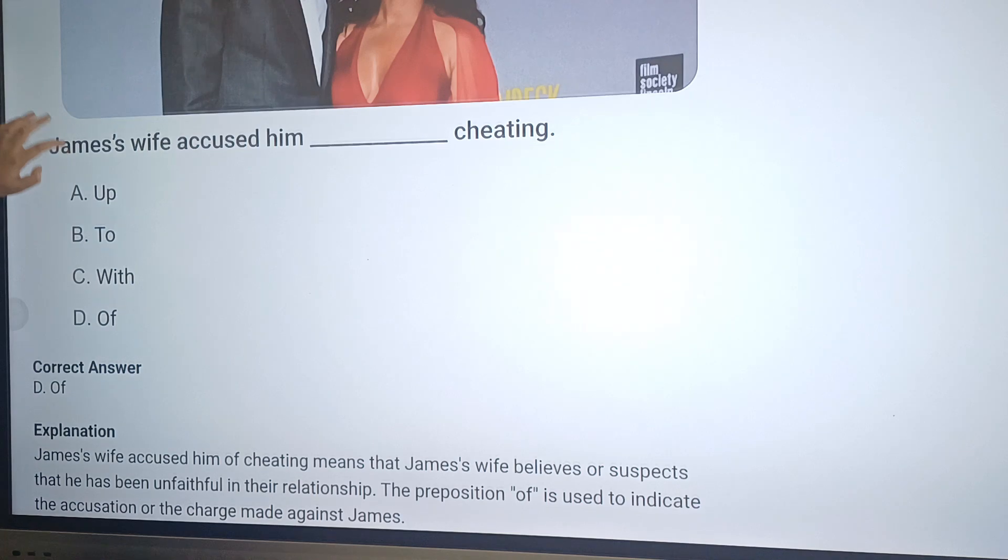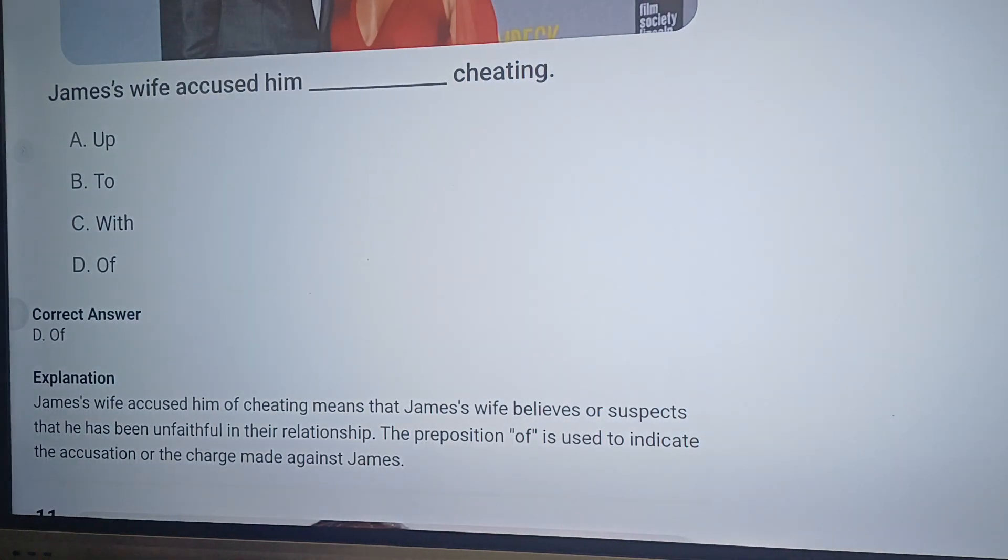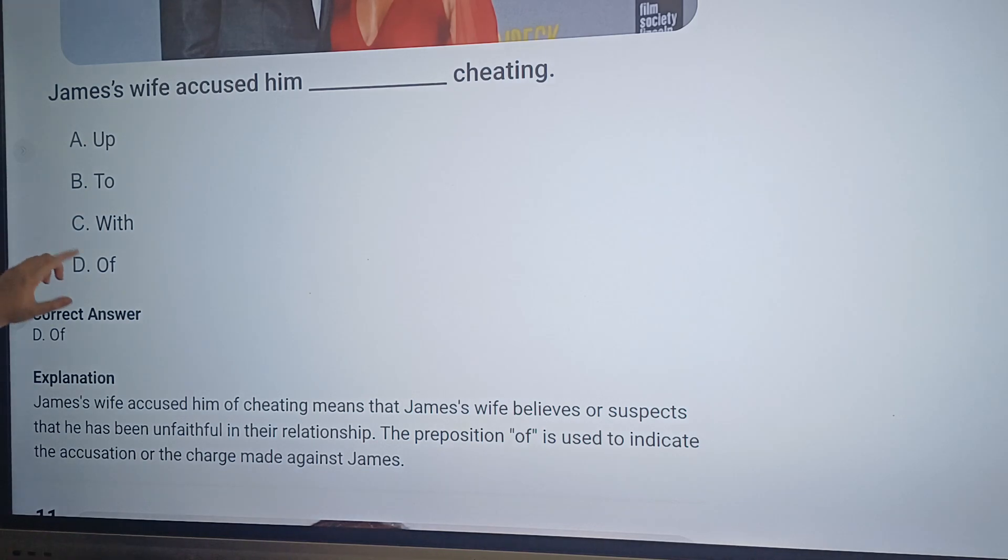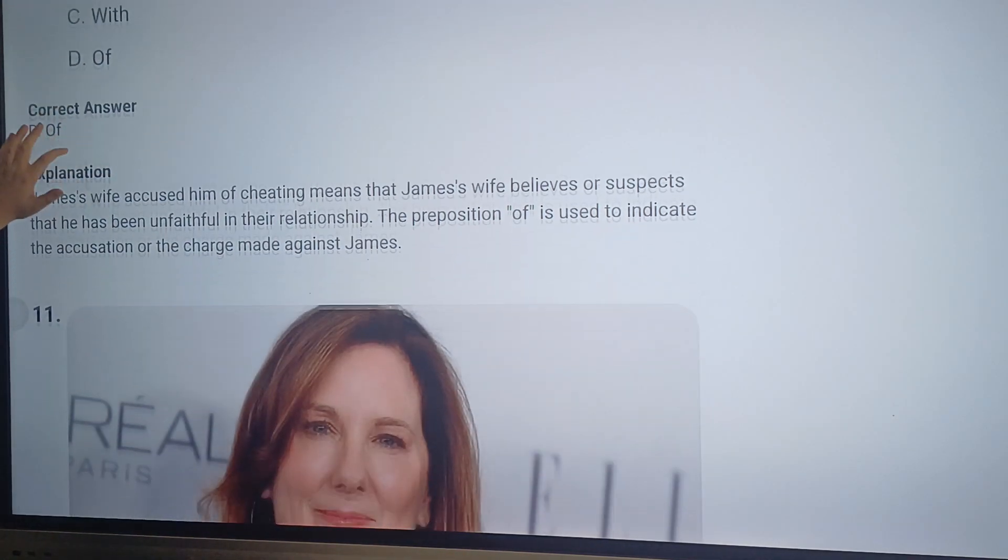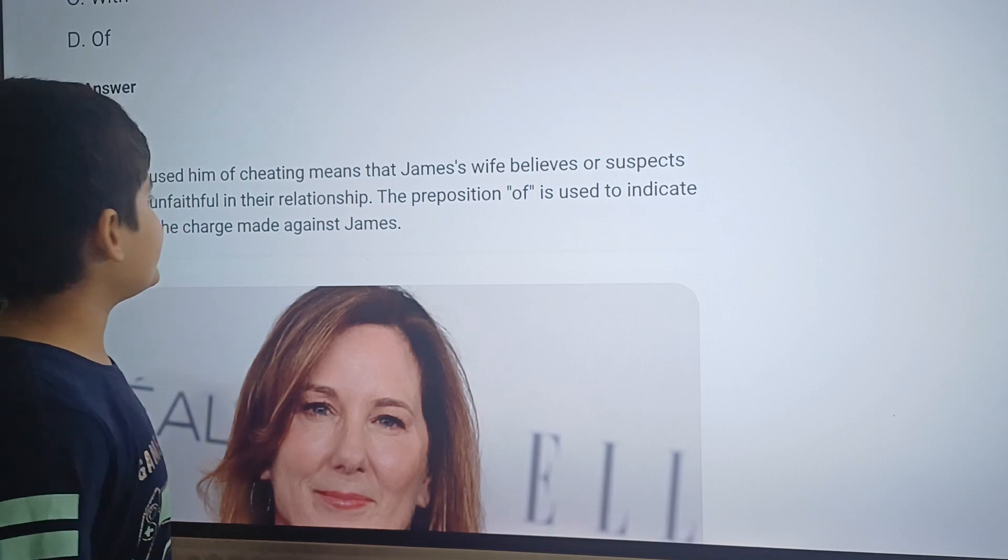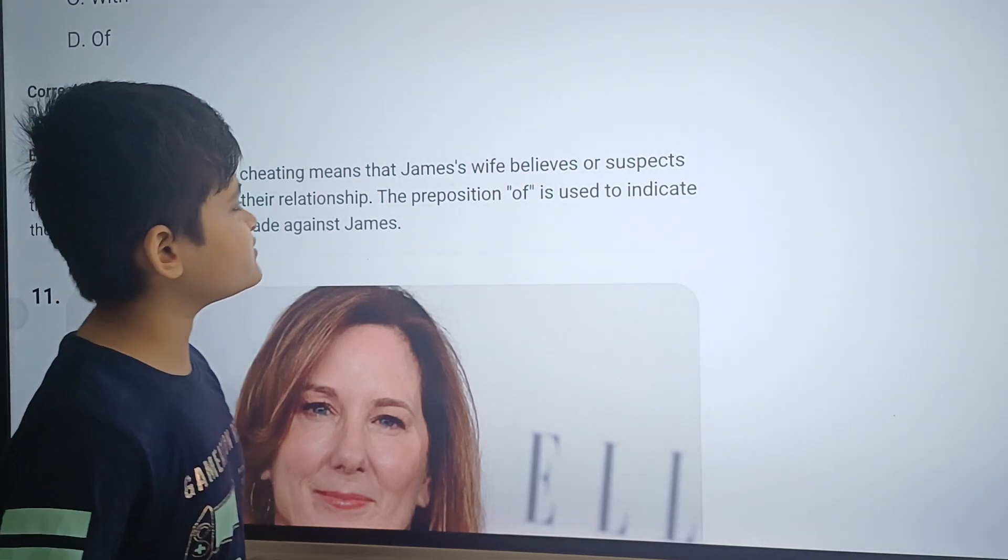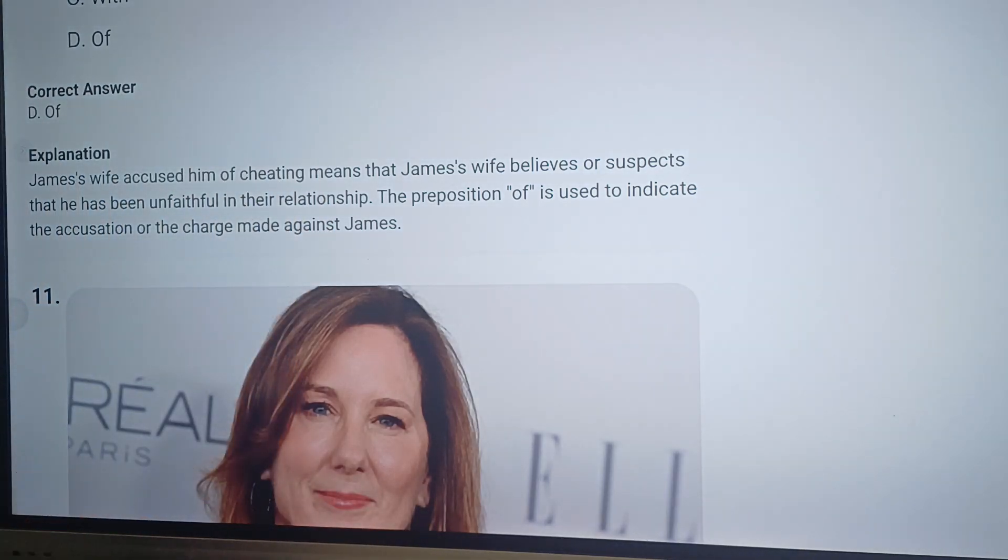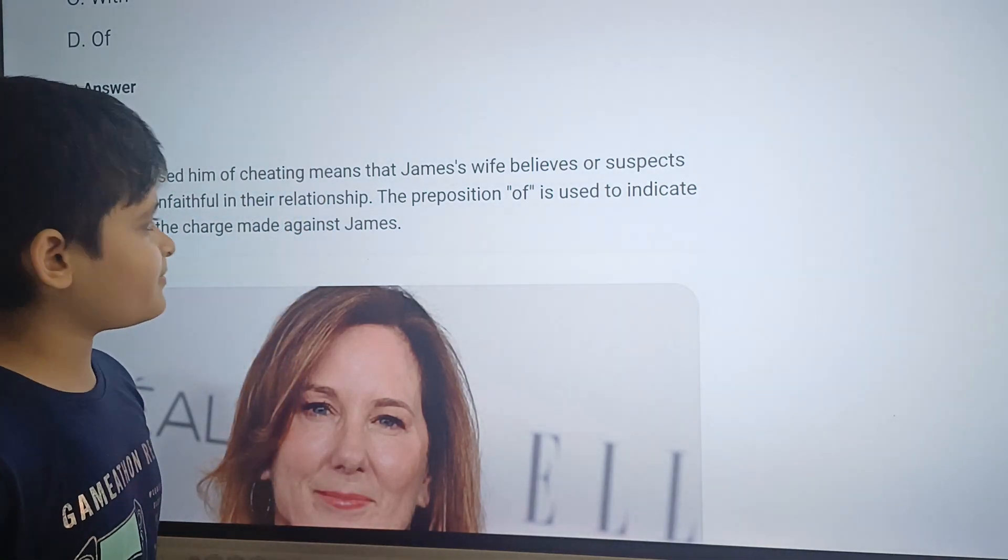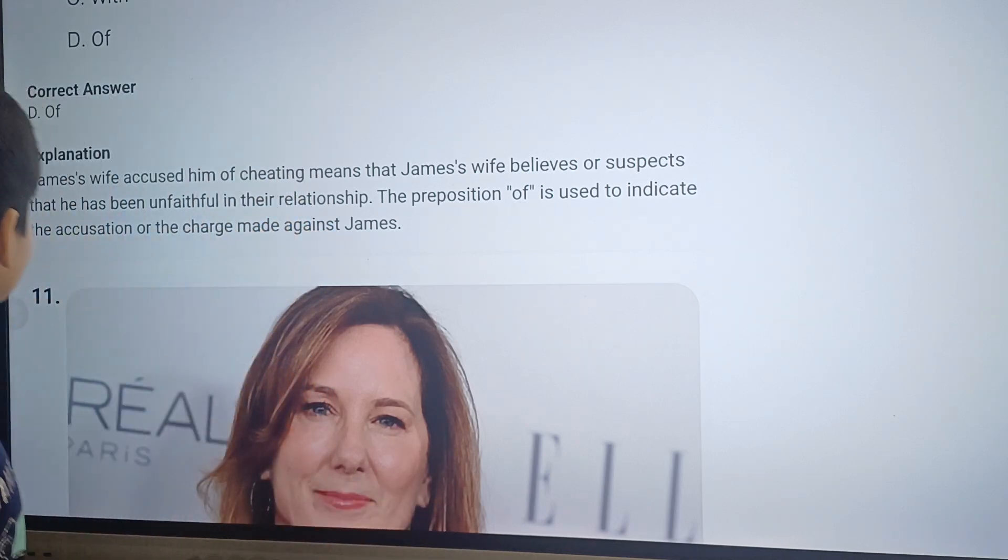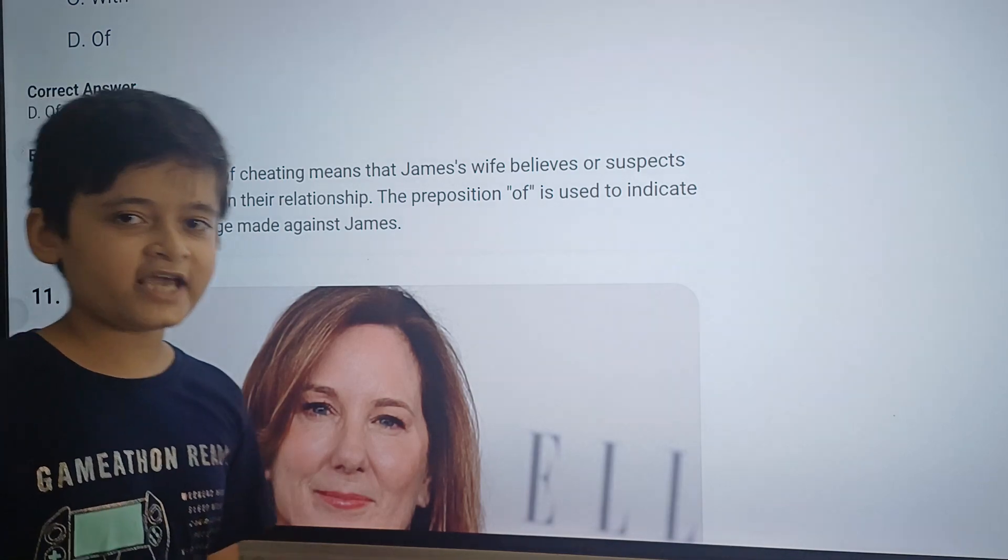Alright, question ten. James' wife accused him dash cheating. Accused him of cheating or option C. The explanation is: James' wife accuses him of cheating means that James' wife believes or suspects that he has been unfaithful in their relationship. The preposition of is used to indicate the accusation or the charge made against James.